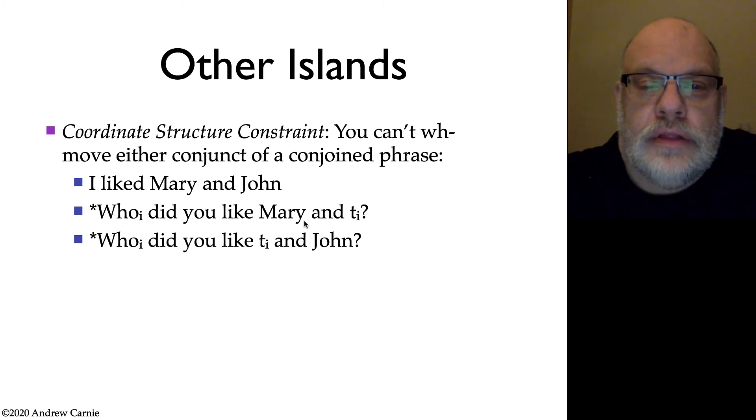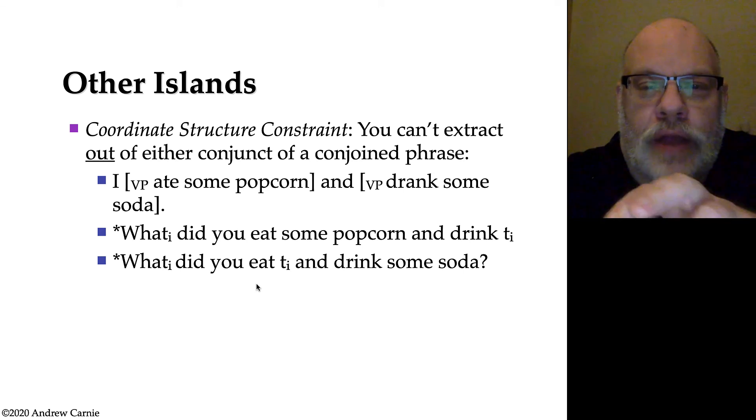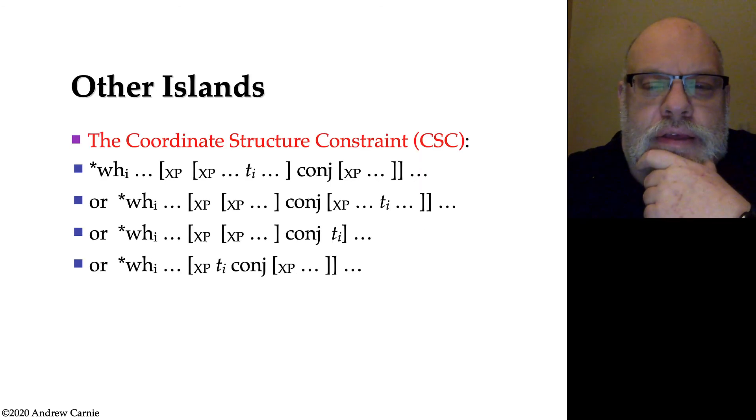You can, of course, do WH movement of both elements. So you can WH move the whole conjunction. You also can't extract out of a conjunction. So here we have two conjoined verb phrases. Ate some popcorn and drank some soda. I ate some popcorn and drank some soda. I cannot do WH movement out of one, but not the other conjunct. So I can't say what did you eat some popcorn and drink where drink the what is referring back to some soda. And similarly, I can't extract out a WH word associated with some popcorn. What did you eat and drink some soda? These are ungrammatical as well.